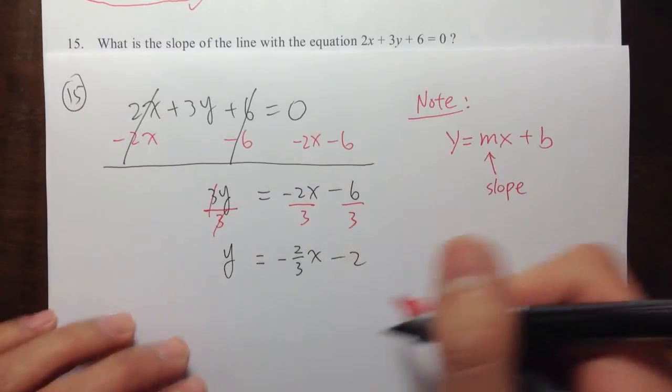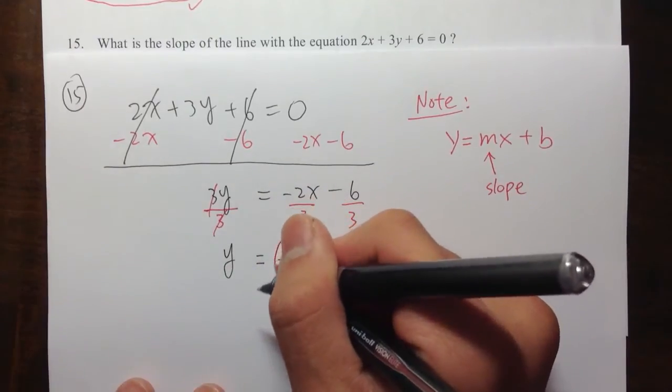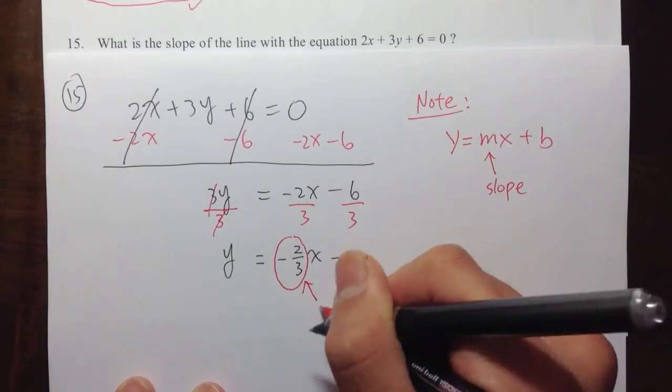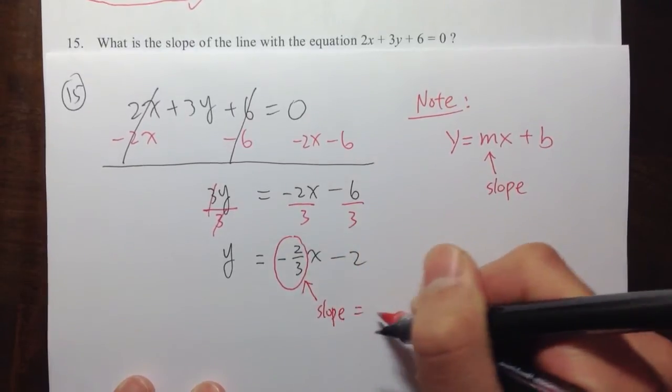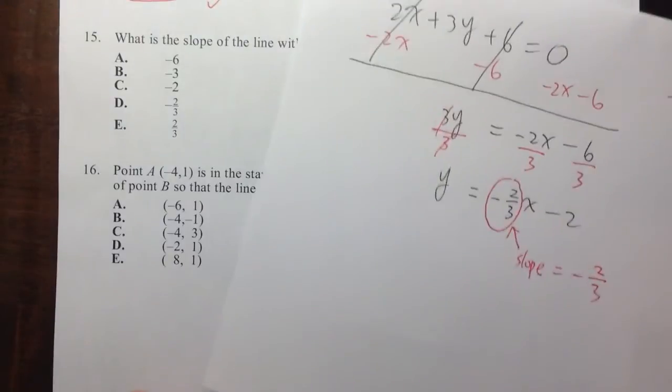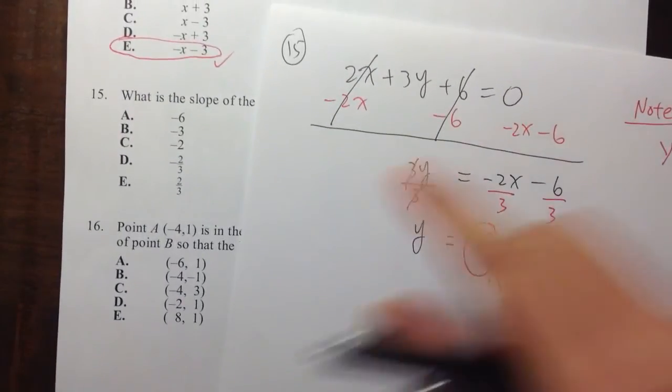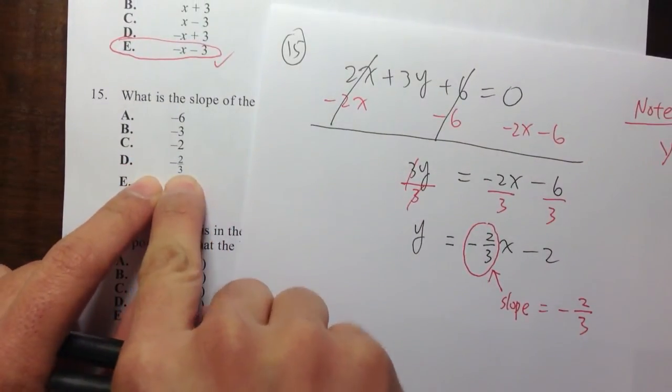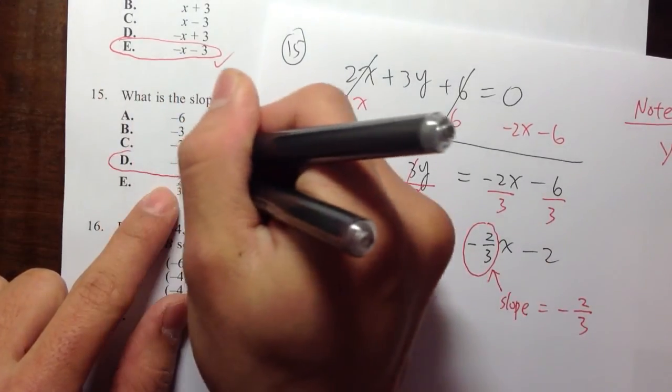We are not looking for the whole equation. We are just looking for the number in front of the x. And that's the slope. So in this case, which is negative 2 third. Let me take a look. Negative 2 third. Looks like that's choice D. Choice D.